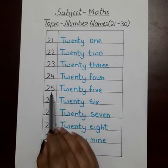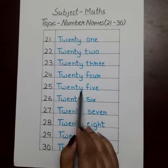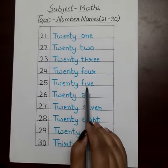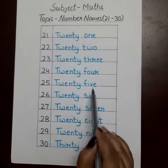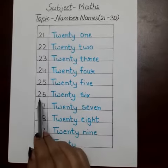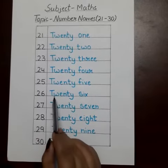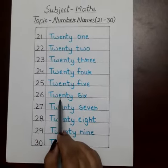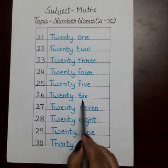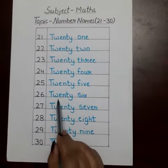25: T-W-E-N-T-Y, 20; F-I-V-E, 5. Twenty-five. 26: T-W-E-N-T-Y, 20; S-I-X, 6. Twenty-six.